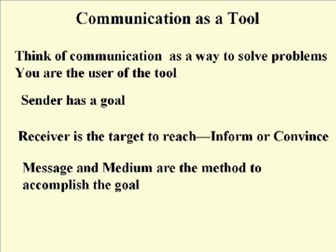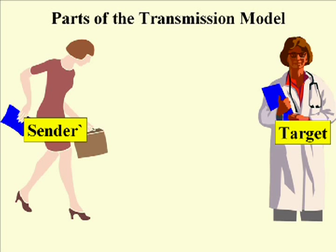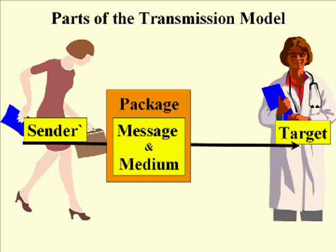What we want to do now is look back at that other model, the transmission model, and see how it changes when we look at it from this perspective. Again, you are the sender — you are the one charged with making the choices about how to solve your problem. Your first problem is: who is your target? Is it one person or more than one person? You have to create a message and choose a medium that will deliver that message in the most effective way to accomplish your goal. We consider that our package: the connection of message and medium working together to accomplish the goal you've set out with the specified target in a given situation.